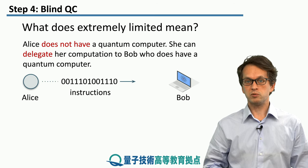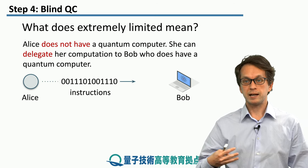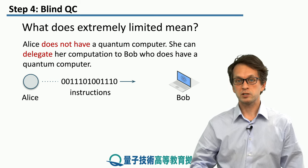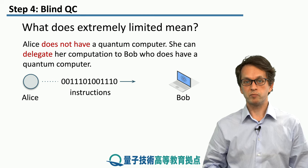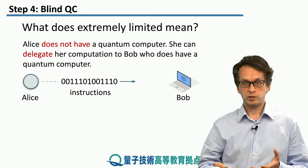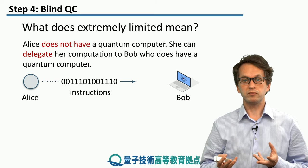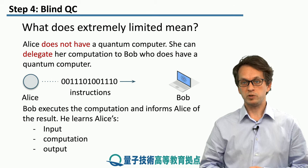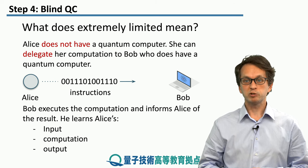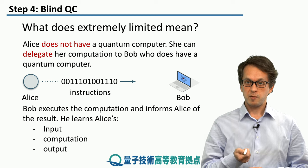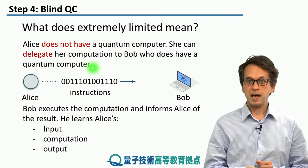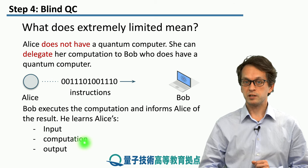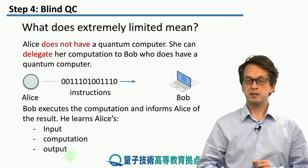In this scenario, what she can do is send him a classical message composed of many bits describing to Bob exactly what computation she wishes him to perform. She needs to describe the input of the computation and the computation itself. Then Bob will take this information, carry out the computation, and tell Alice the output — the result of the computation. But in the process, he learns everything: the input, the computation itself, and the output.